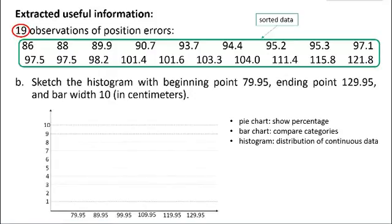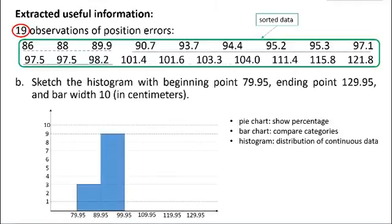There are three values lying between 79.95 and 89.95. So the height of the first bar is 3. Then, it's a repeated walk to draw the rest. There are respectively 9, 4, 2, and 1 values lying in the rest bars. Till now, we finish the histogram, and it's time for the last subquestion.